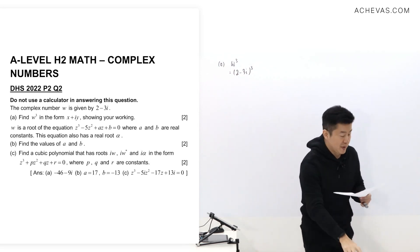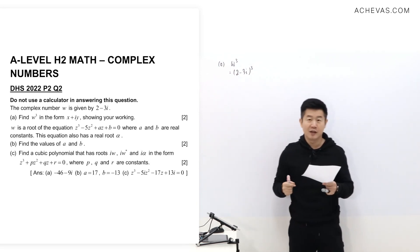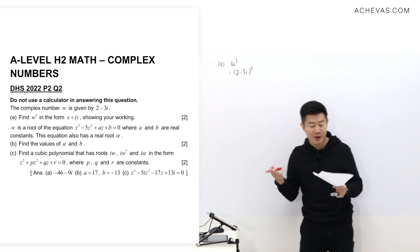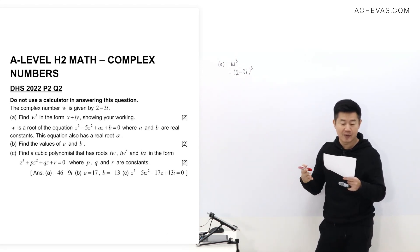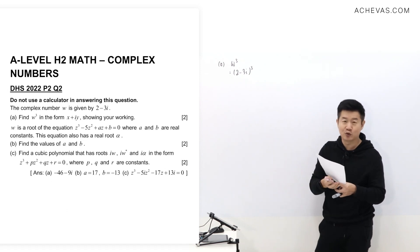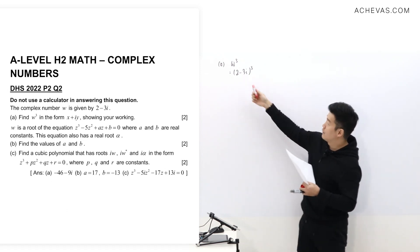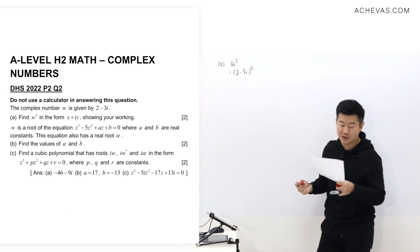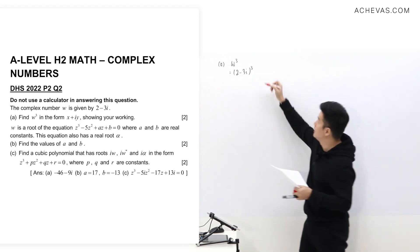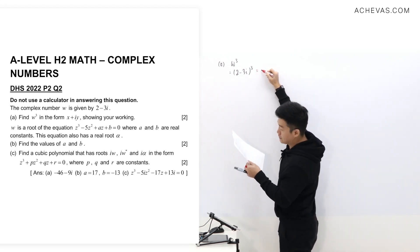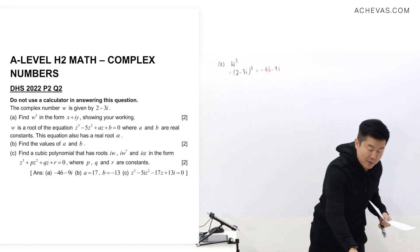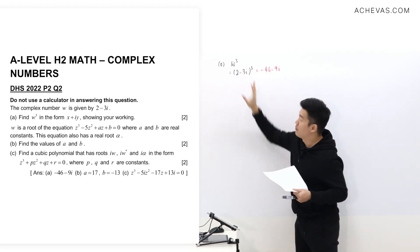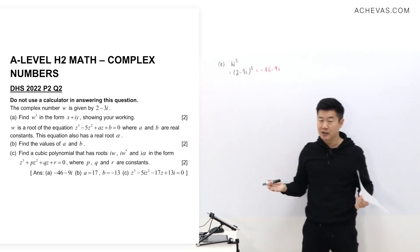Although we are not supposed to use our calculator, we can still press it in to do a quick check and verification — what is the final answer if I were to press in (2 minus 3i) to the power of 3. From the calculator, I can find out that the result is negative 46 minus 9i. So let's see whether we will be able to get this by doing an expansion.